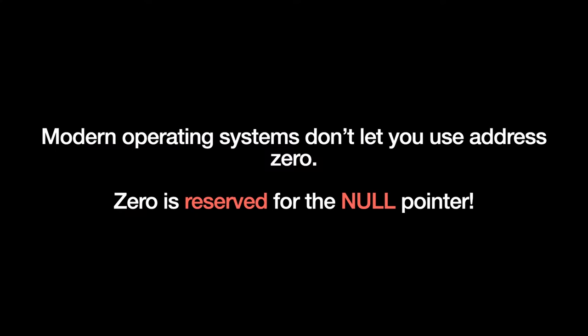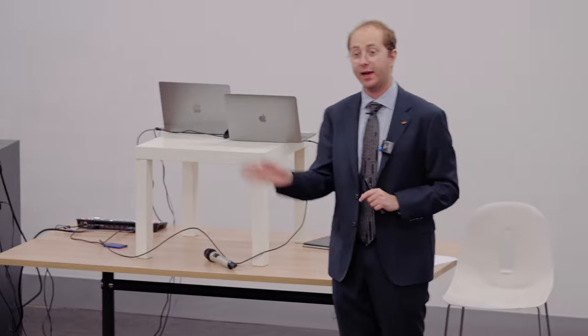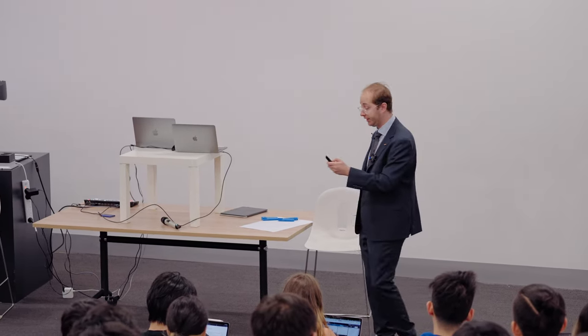Modern operating systems don't actually let you start from zero — zero is reserved for null, so we know there's nothing there. Because this whole thing is a fiction, there's no physical location zero or one. It's just an abstraction the OS uses to make our lives easy. So zero is reserved for what we'll call the null pointer. It points to nothing.